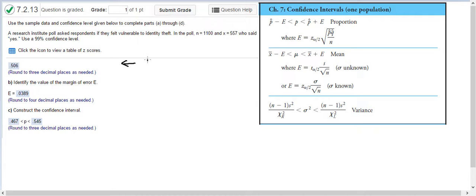This line here is just 557 divided by 1,100. So in other words, 50.6% of the people, the respondents, felt vulnerable to identity theft in this poll.